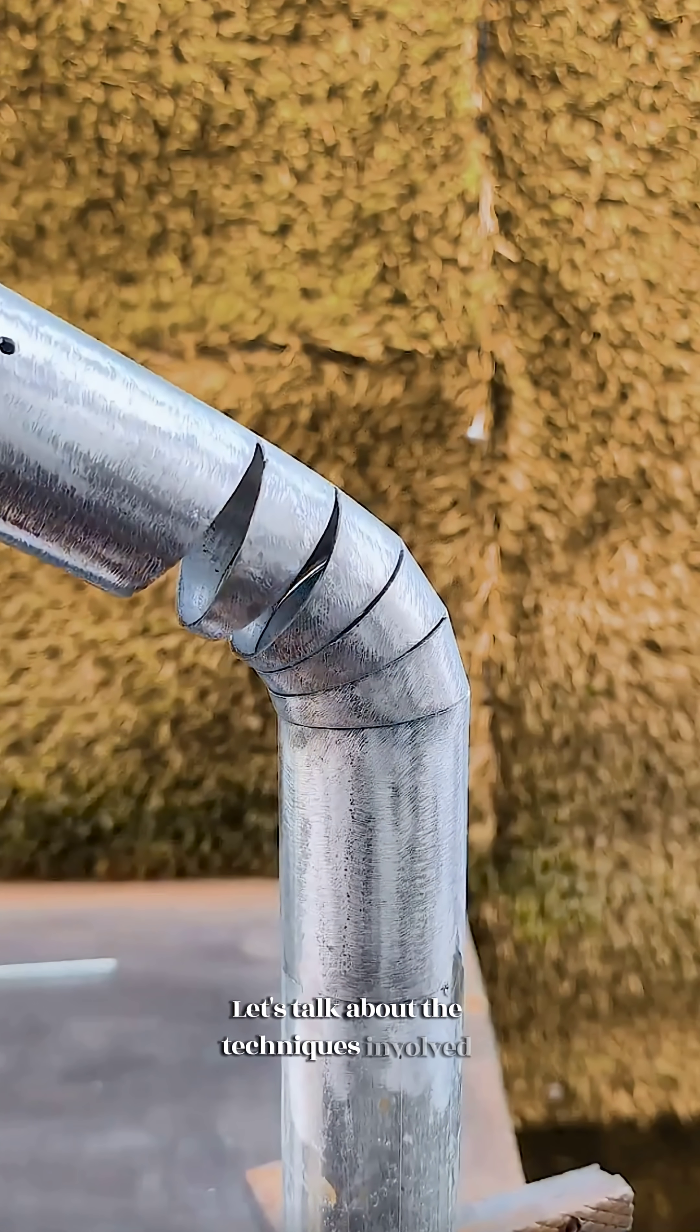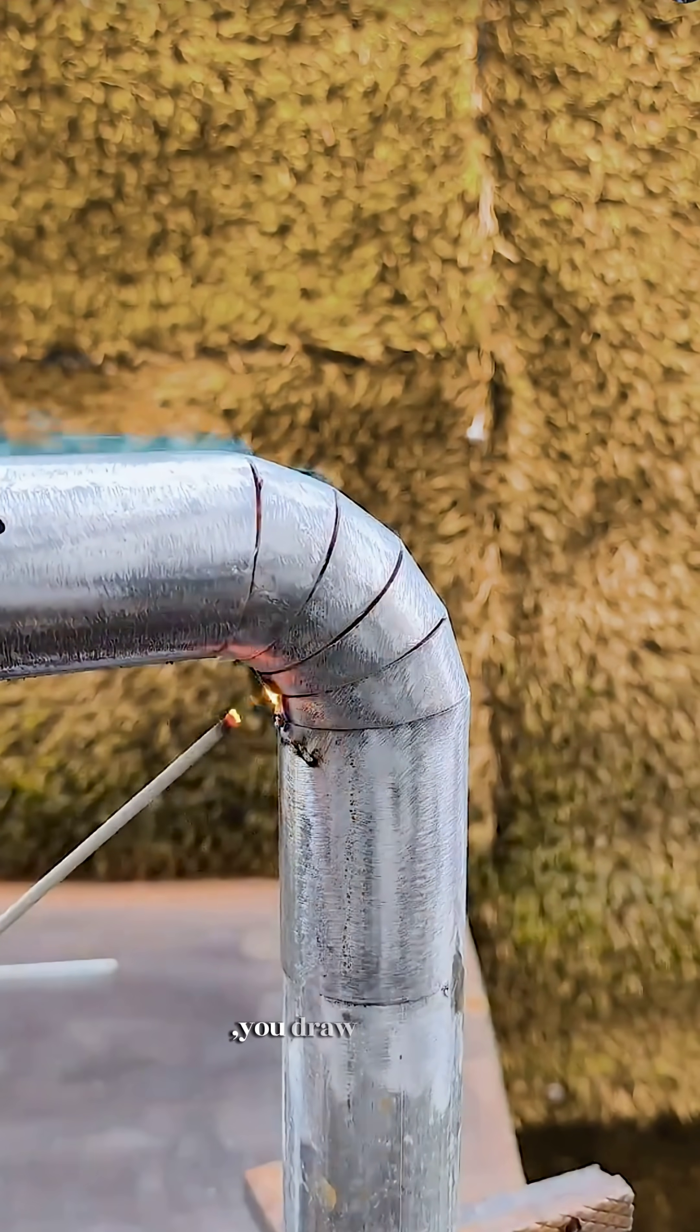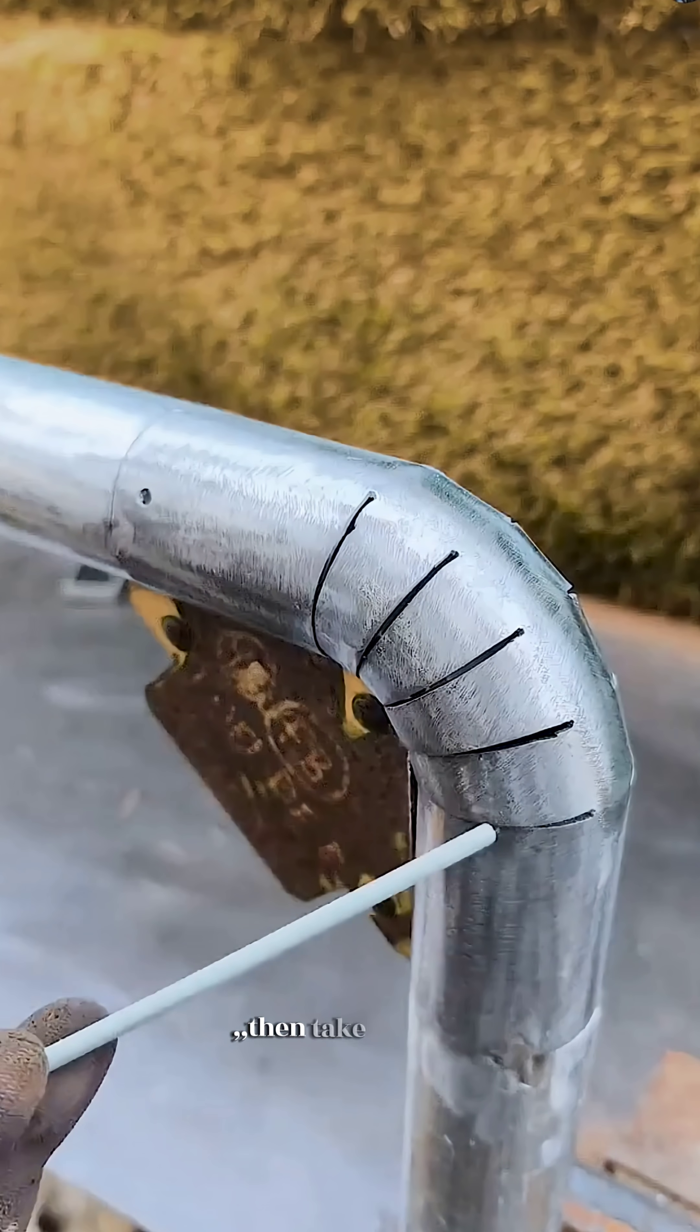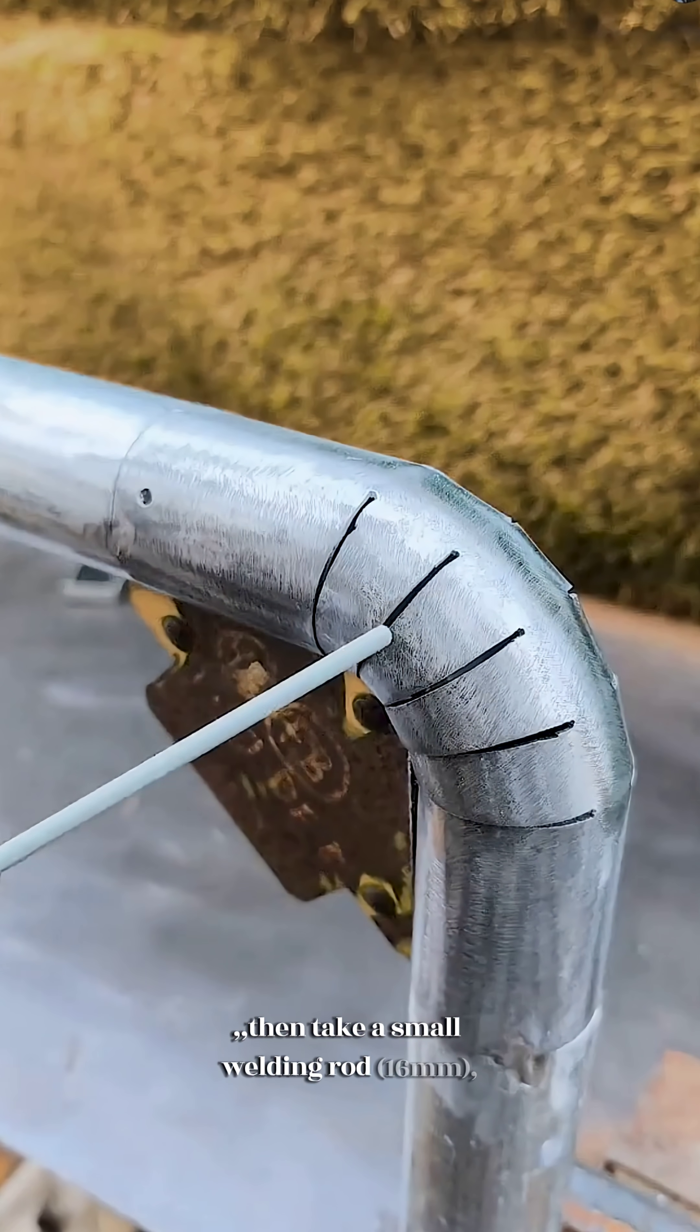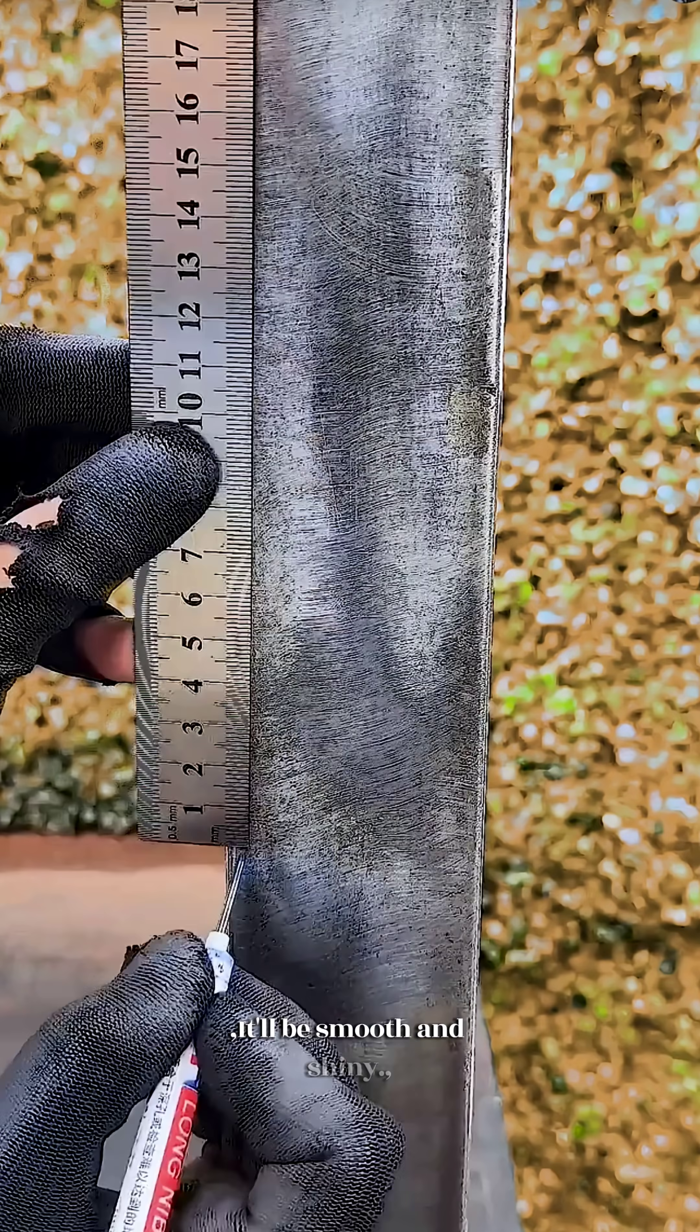Let's talk about the techniques involved in making a round tube with a rounded corner. You draw the tube this high, then take a small welding rod, 16mm, and grind it with an angle grinder. It'll be smooth and shiny.